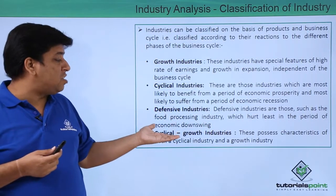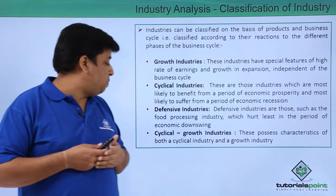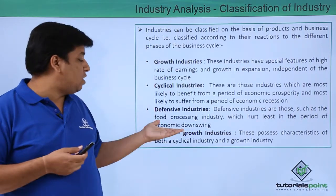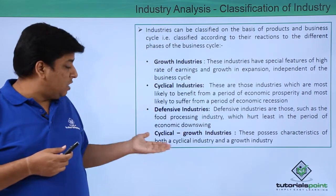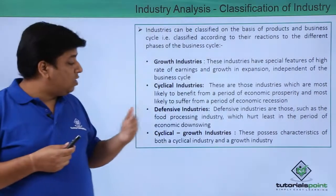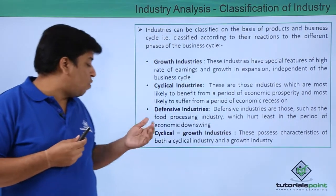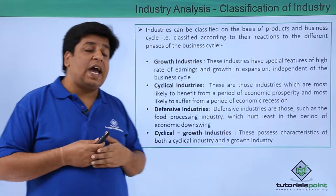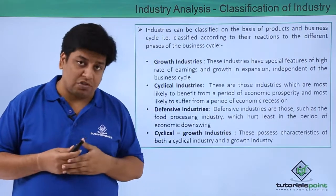Defensive industries are those such as the food processing industry which are hurt the least during a period of economic downswing. Cyclical growth industries possess characteristics of both cyclical industries as well as growth industries.